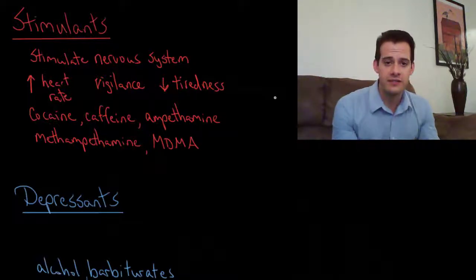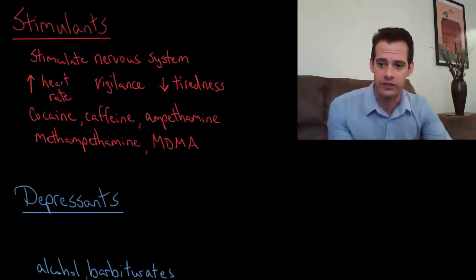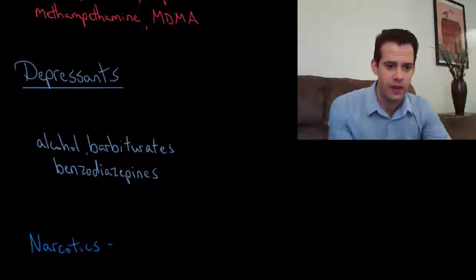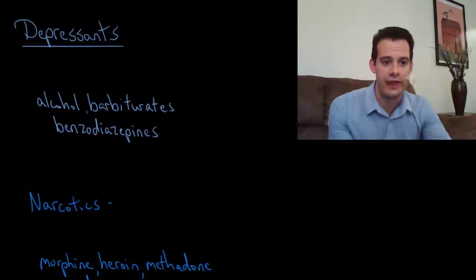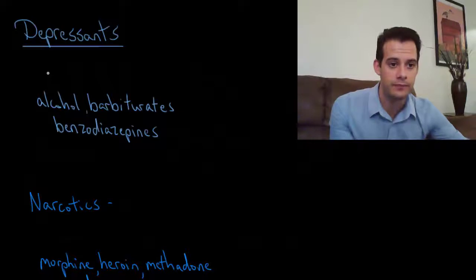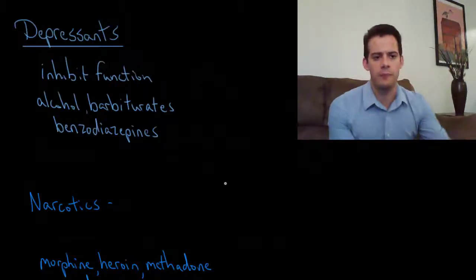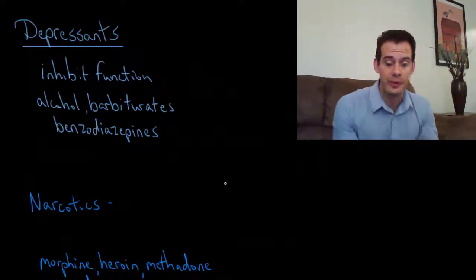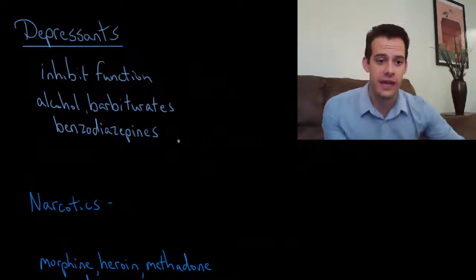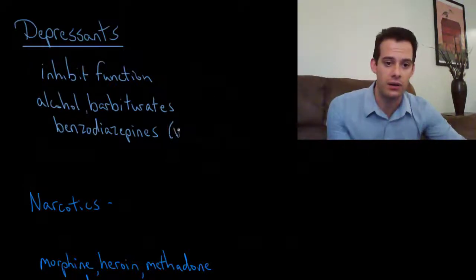Those are stimulants. Now we'll move to the next category of drugs, and these are depressants. Depressants refer to drugs that inhibit function—they decrease functioning in the nervous system. Examples of depressant drugs would be alcohol, barbiturates, and benzodiazepines, which would include drugs like Valium and Xanax.